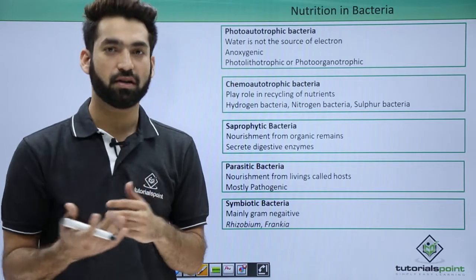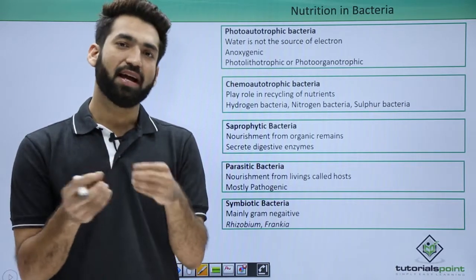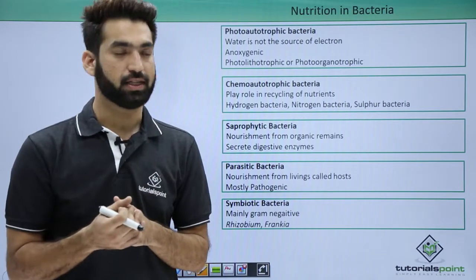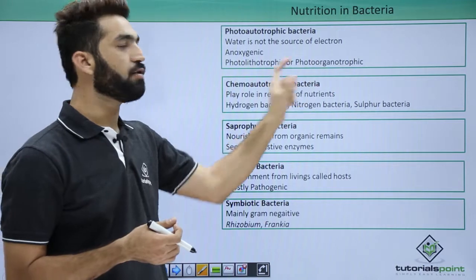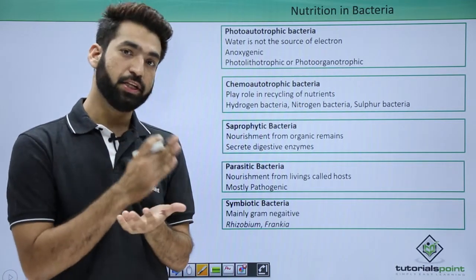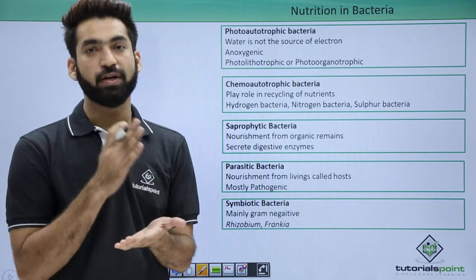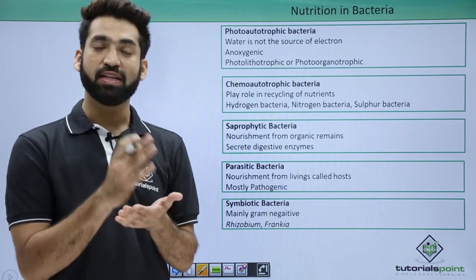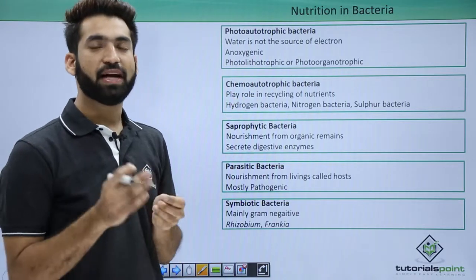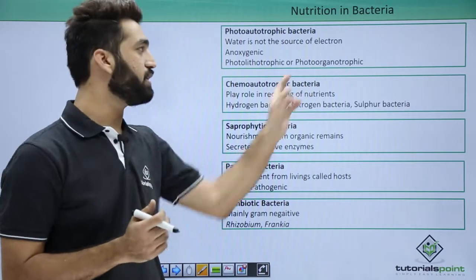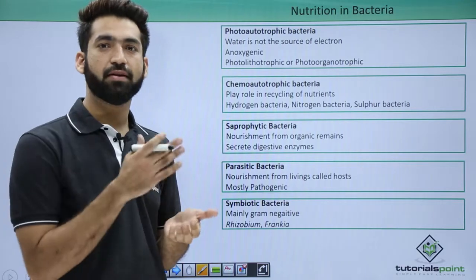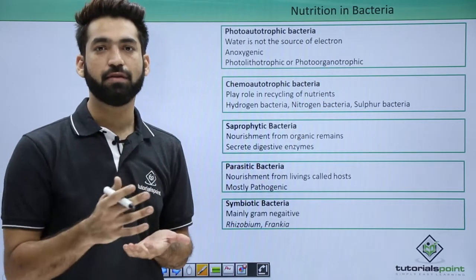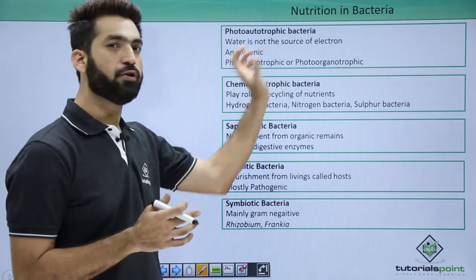In higher plants most pigments are chlorophyll molecules, but in bacteria there is bacteriochlorophyll and bacterioviridin, which harness light. Bacteria can be photolithotropic — if CO₂ reacts with sulfur compounds — or photoorganotropic — if CO₂ reacts with non-sulfur organic compounds. Photolithotropic bacteria include green sulfur bacteria and purple sulfur bacteria. Photoorganotropic bacteria, having no sulfur, are known as green non-sulfur bacteria or purple non-sulfur bacteria.